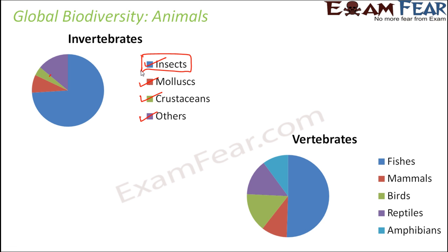Among vertebrates — fishes, mammals, birds, reptiles, and amphibians — the most diverse group is fishes, covering almost 50% of vertebrate diversity. Next are mammals, birds, reptiles, and amphibians. So insects and fishes are the groups with the greatest variety of species within the animal kingdom.